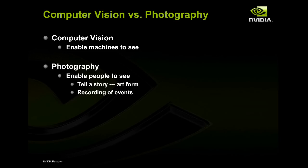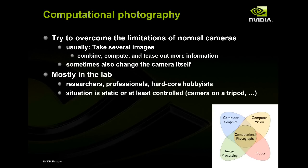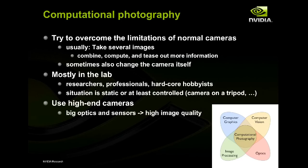With computational photography, you try to overcome limitations of traditional cameras. Often you do this by taking several images, combining them, teasing out information, getting over some deficiencies, and creating better images. Sometimes you even change the camera itself to try to get those better images. But in the past, it's mostly been done in labs by researchers and professionals under very controlled conditions — cameras on tripods, immovable objects — using high-end cameras with very nice optics and sensors, with processing done later offline on a PC.